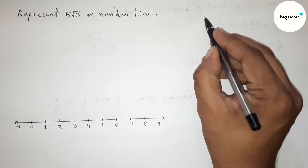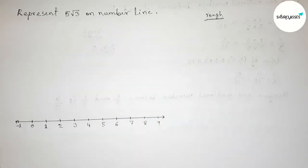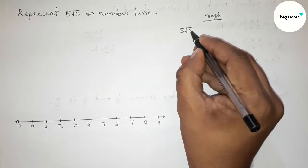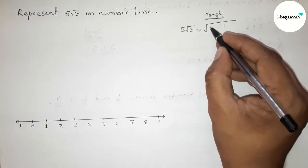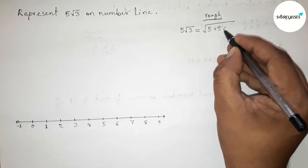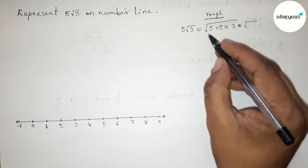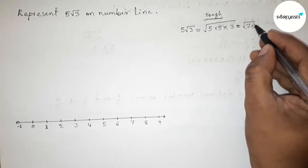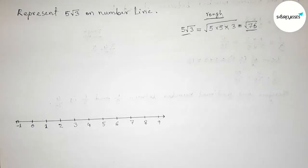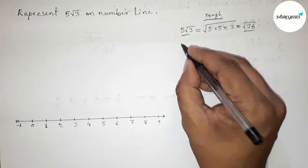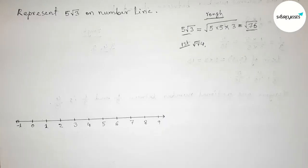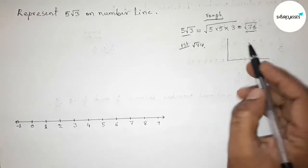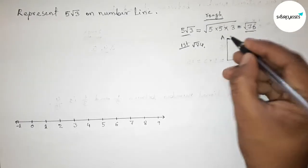Now roughly discussing some important calculations. First, simplifying 5√3: the number outside the root will be squared under the root, so 5 becomes 5×5×5×5×3... wait — 5²×3 equals 25×3 equals 75. So 5√3 = √75. To represent √75, we first need to represent √74.